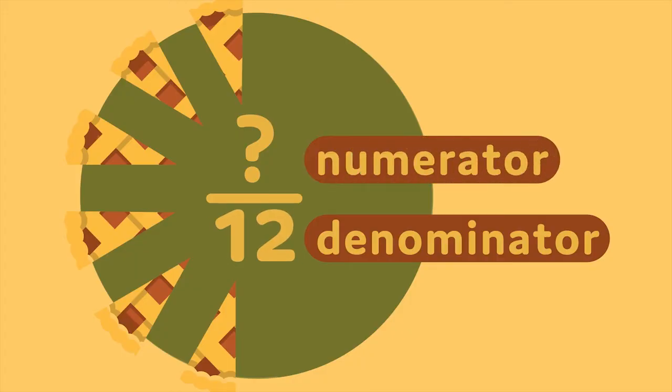The numerator is the number of parts being considered. In this case, the numerator is six. Since each of the two boys ate three pieces of pie, the boys ate six twelfths, or one half of the pie.